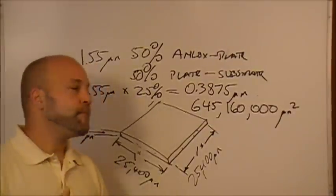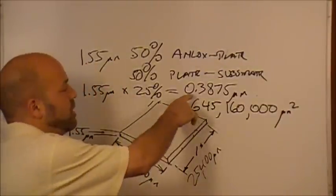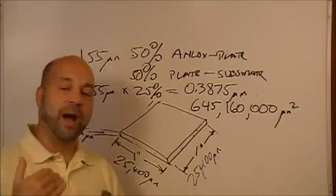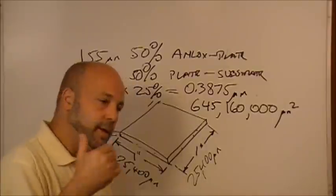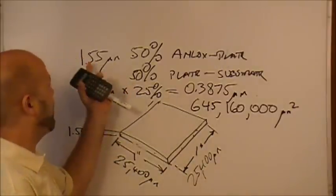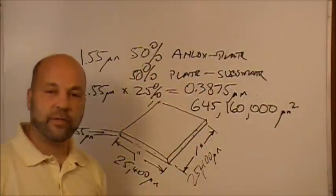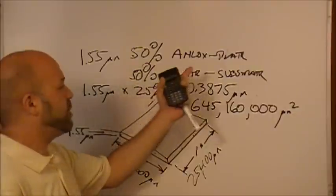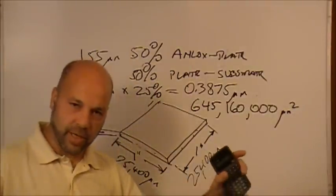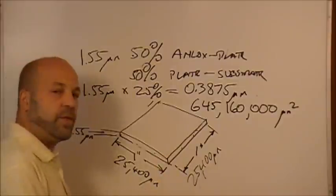And I can tell you that, in theory, we will transfer 0.3875 microns of ink wet to the substrate using a 1 BCM anilox roll with 50% transfer from anilox to plate and 50% transfer from plate to substrate. So a very, very thin film.